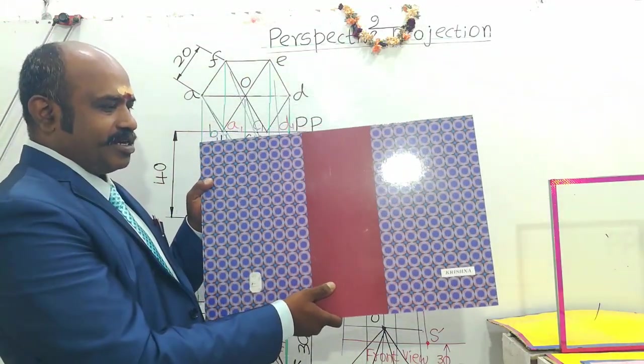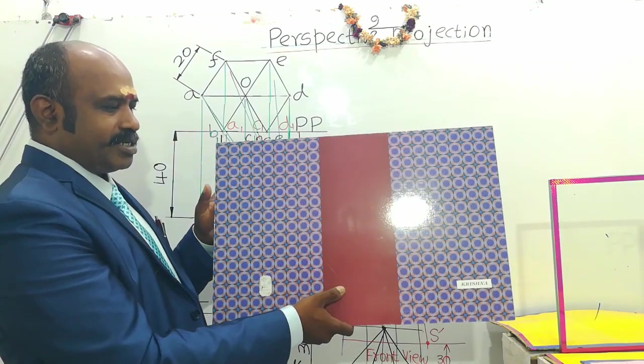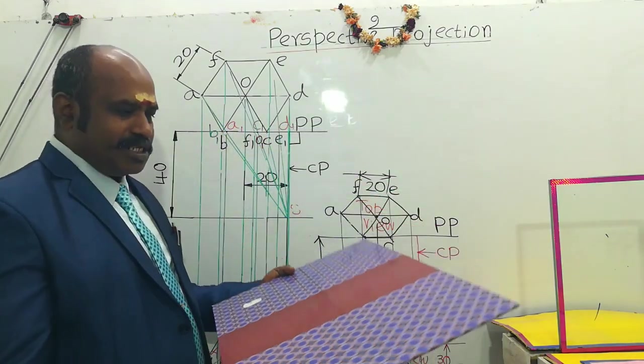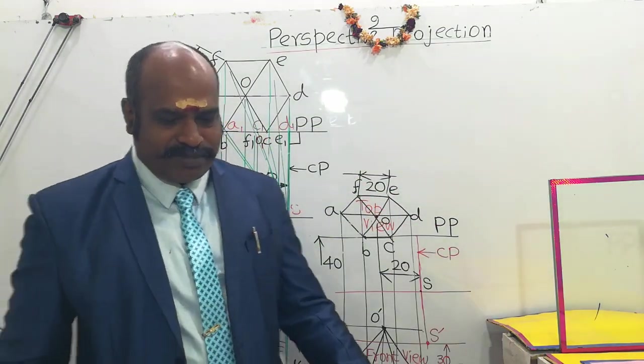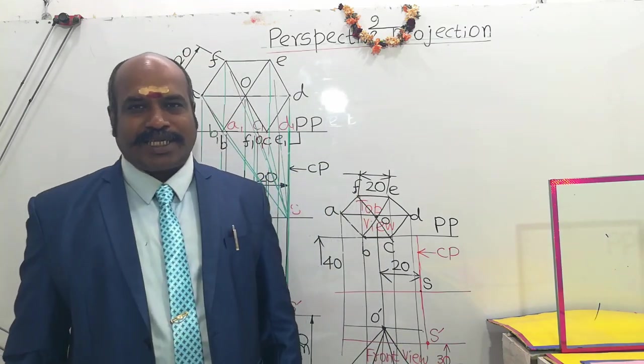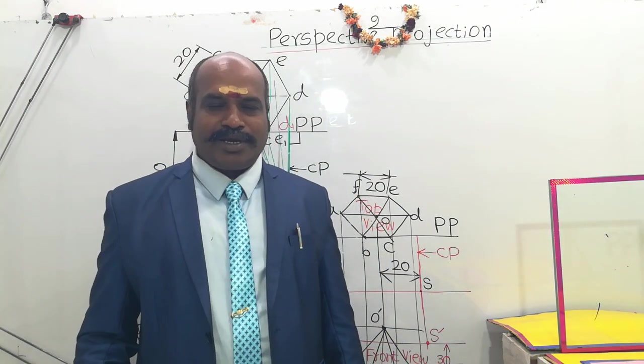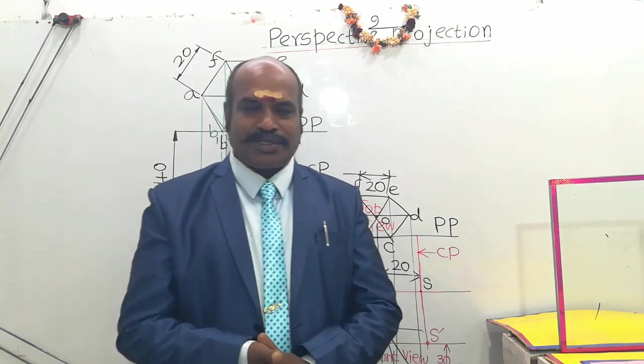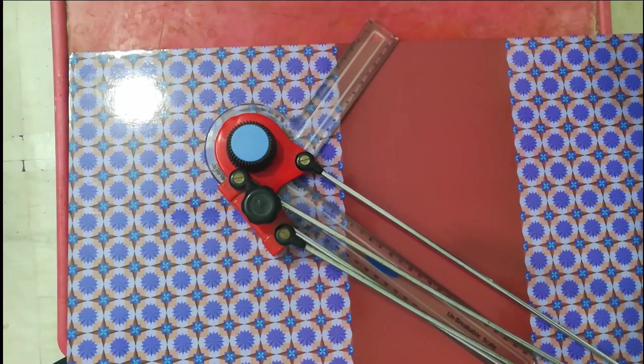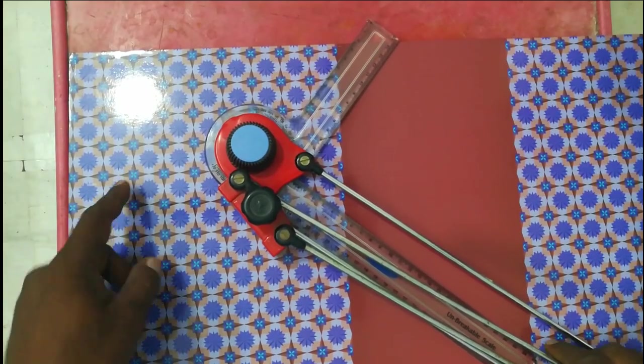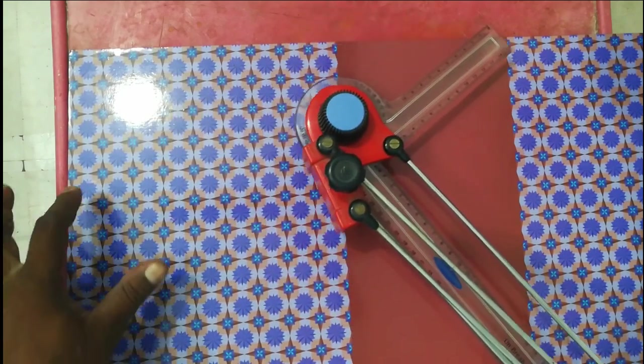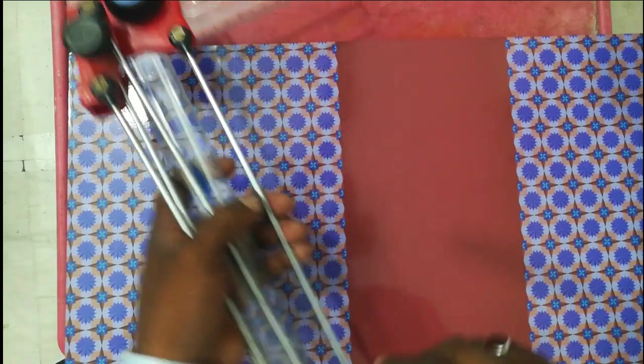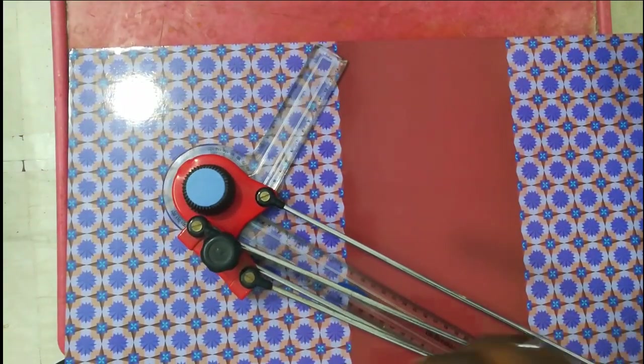The office pad is available in stationery shop or it can also be called as accounts pad. This is the drafter. The office pad is a substitute for drawing board. A drawing board costs about one thousand, one thousand five hundred rupees and is not easily available in the shop. The office pad or accounts pad with the mini drafter is a substitute. You can use this office pad.